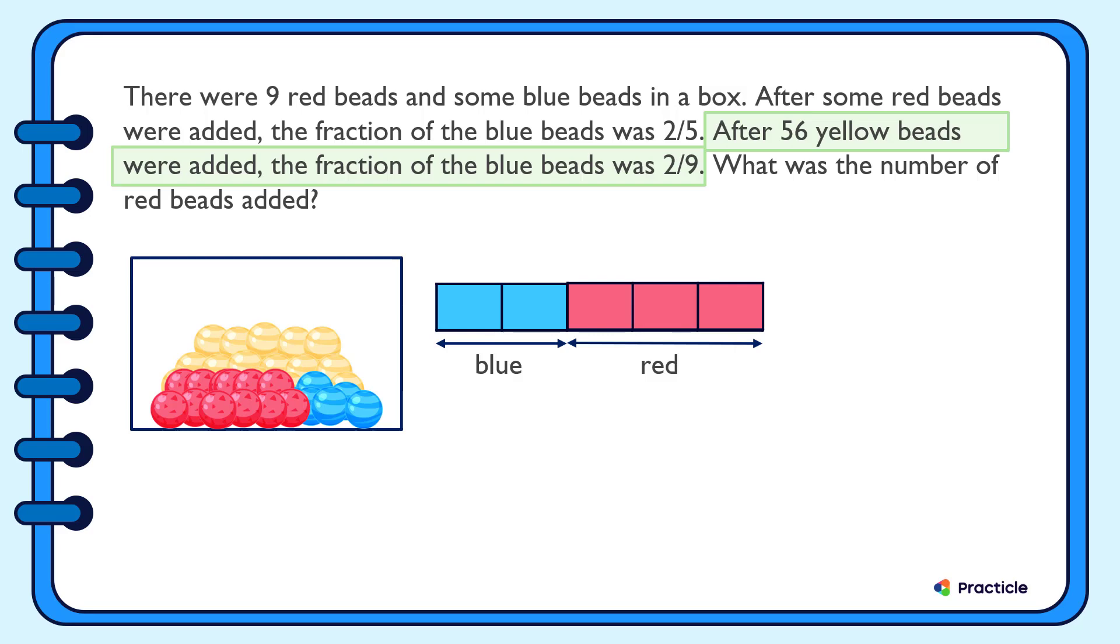Since we know that the fraction of the blue beads was two-ninths, and we already have two units over here to represent the blue beads, all we need to do is to make the total number of units here 9 units. Let's see. We already have 5 units here. Agree? So let's add another 4 more units to our model so that we have a total of 9 units. Because we added 4 units, this means that these 4 units should represent the 56 yellow beads that were added. Following so far?